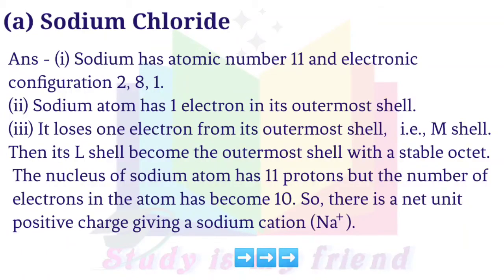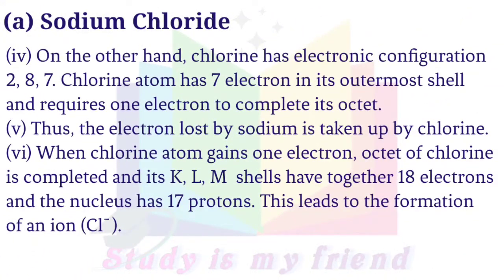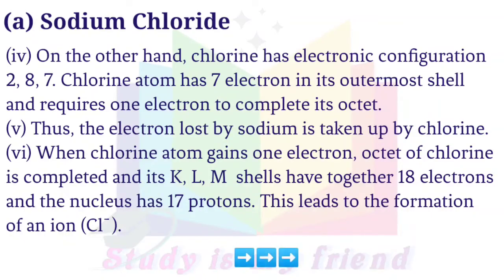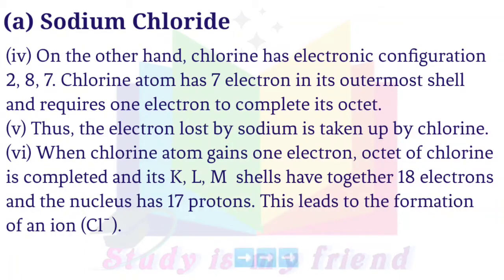The nucleus of sodium atom has 11 protons but the number of electrons in the atom has become 10. So there is a net unit positive charge, giving a sodium cation Na⁺. 4. On the other hand, chlorine has electronic configuration 2, 8, 7. Chlorine atom has 7 electrons in its outermost shell and requires one electron to complete its octet. 5. Thus, the electron lost by sodium is taken by chlorine. 6. When chlorine atom gains one electron, the octet of chlorine is completed and a chloride ion Cl⁻ is formed.